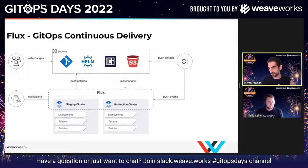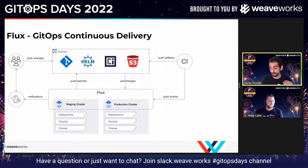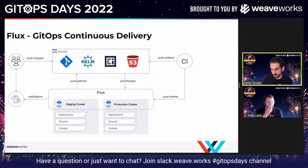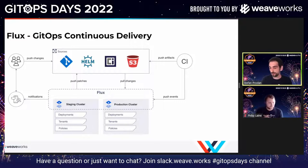Flux is moving beyond Git and GitHub — it can now synchronize desired state from an S3 bucket, MinIO, OCI repositories, Helm repositories, and Git itself. It is a reactive system: it issues events for everything it does and can also receive events from outside — from CI, from a container registry, or from a Git provider — in order to do its job faster.